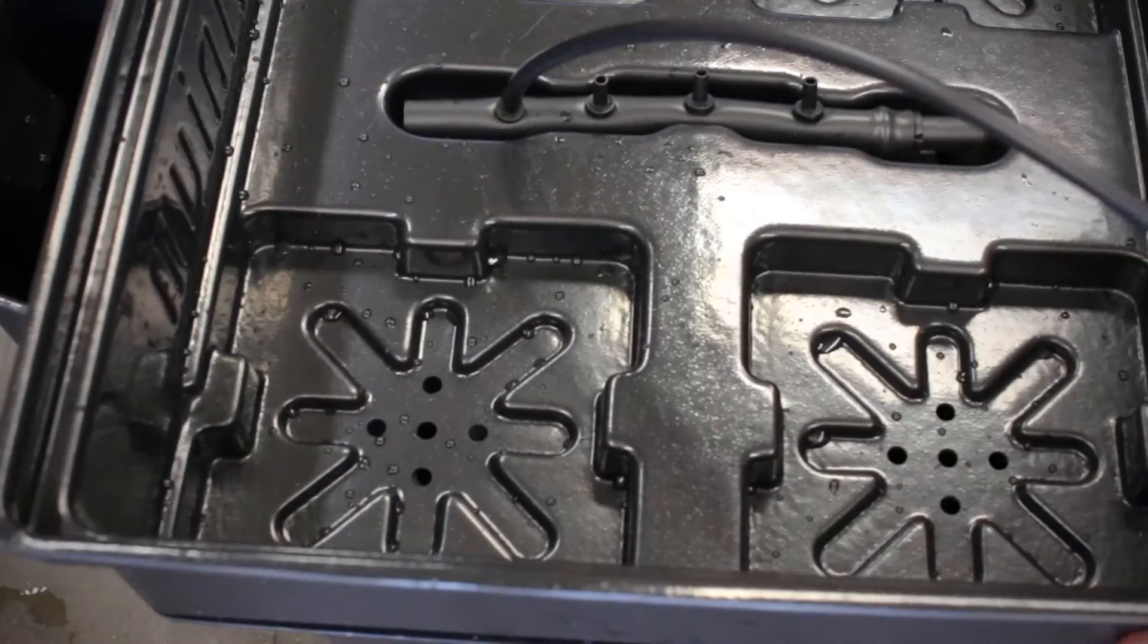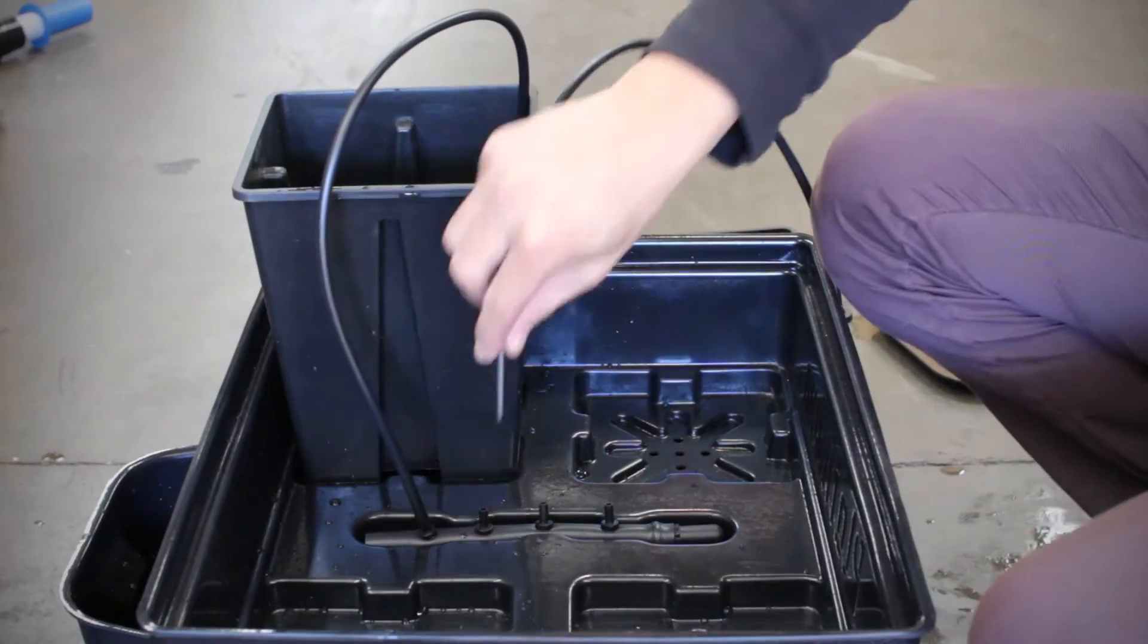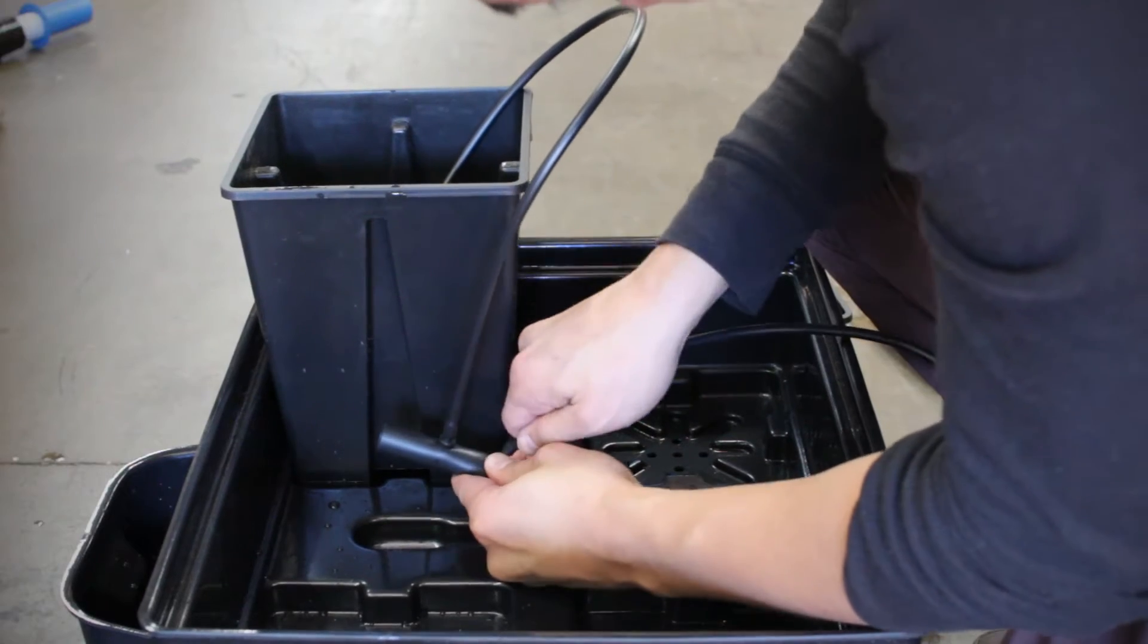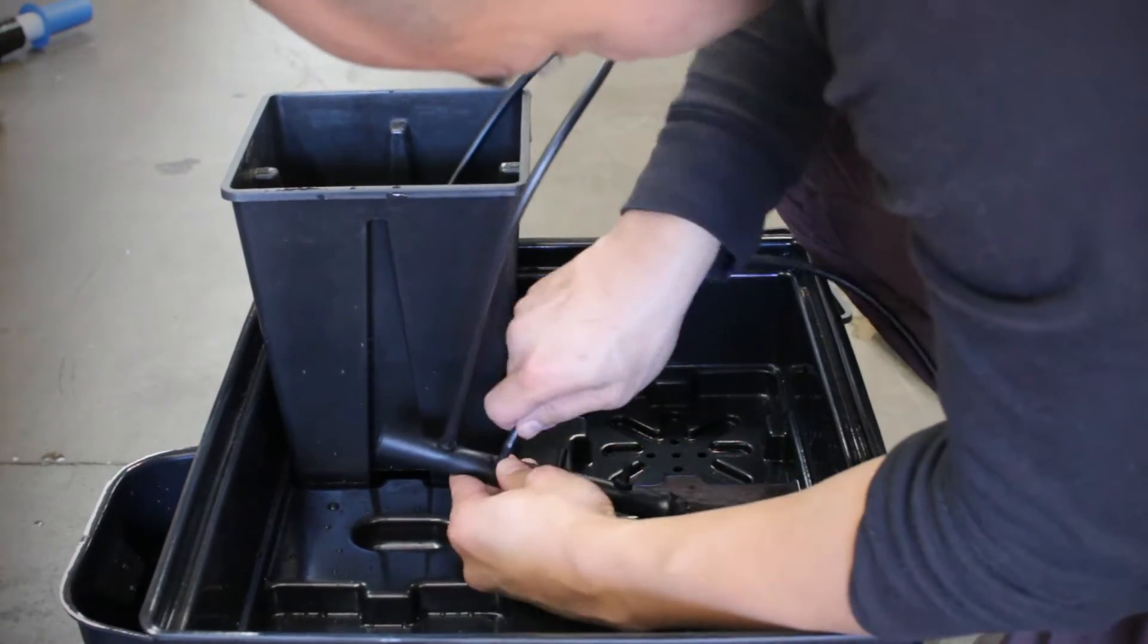Put the top board back on, then connect the four smaller pipes to these plugs. This will take a lot of force, so if you have to, you can use grease or lubrication to make it easier.